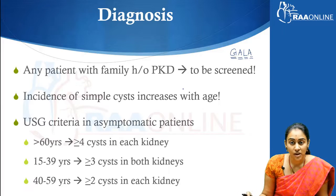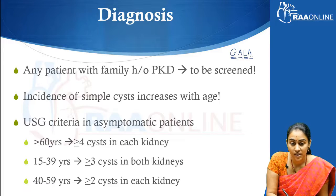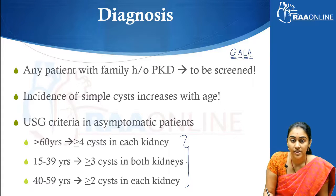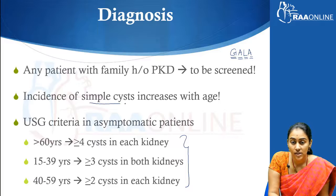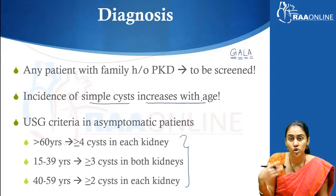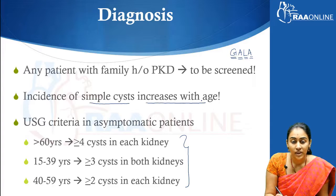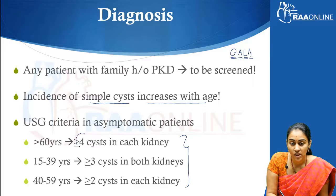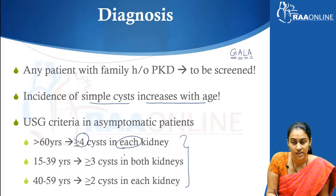There are specific ultrasound criteria in asymptomatic patients. The criteria varies age-wise because the incidence of simple cysts increases with age. This is why, to diagnose polycystic kidney disease in an older individual, there needs to be a much greater number of cysts. In a patient above 60 years of age, 4 or more cysts in each kidney is diagnostic of polycystic kidney disease.